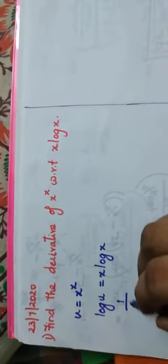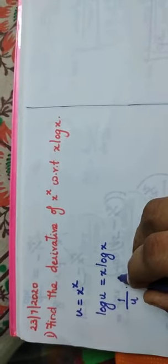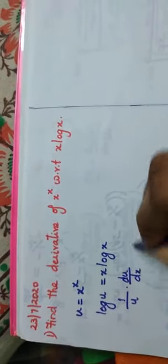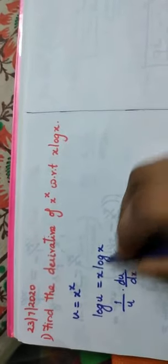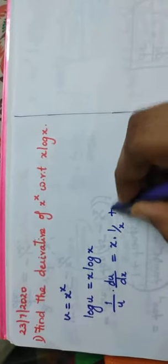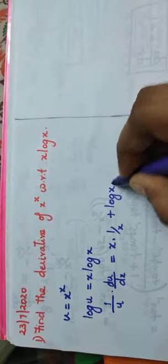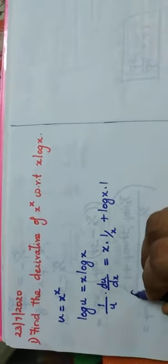Now differentiating both sides. Using log differentiation: 1/u · du/dx = log(x) differentiation is 1/x plus log(x) into x differentiation which is 1.